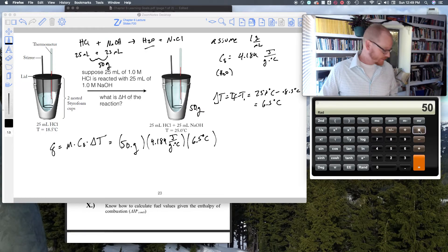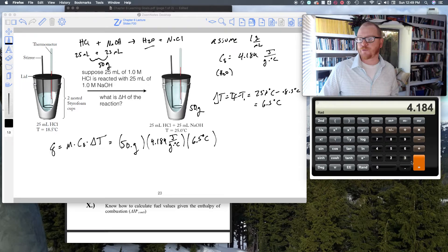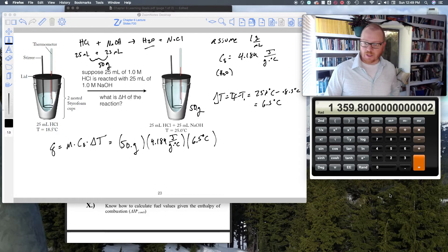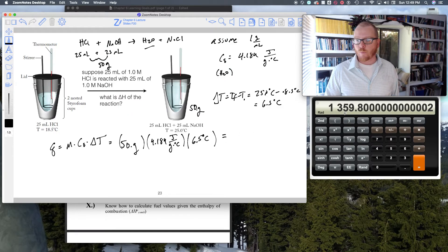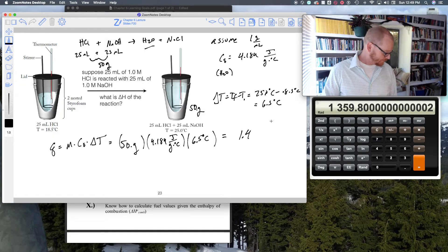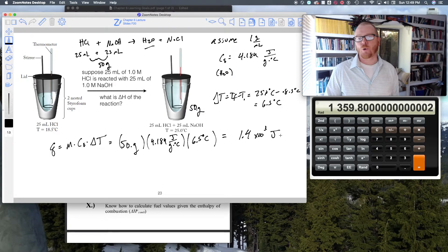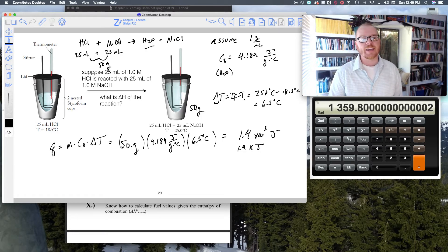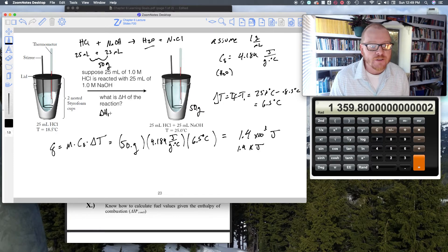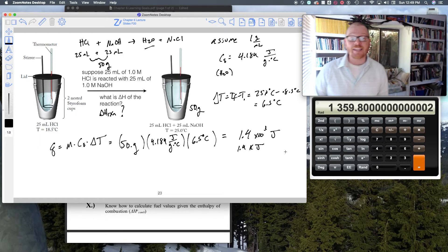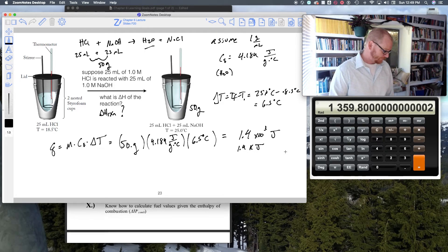When I go and calculate this, 50 times 4.184 times 6.5, that comes out to 1.4 times 10 to the 3 joules, which is the same as 1.4 kilojoules. Now that's how much heat was released. But it's asking me for the delta H of the reaction. This number is not it. This is the Q, that's the heat released, but it's not the enthalpy of reaction.